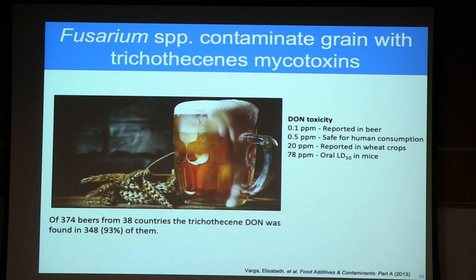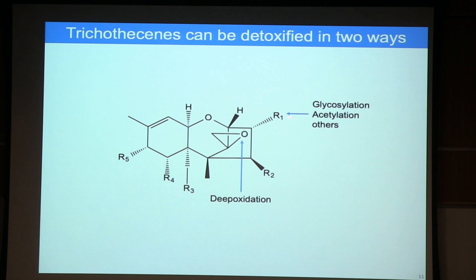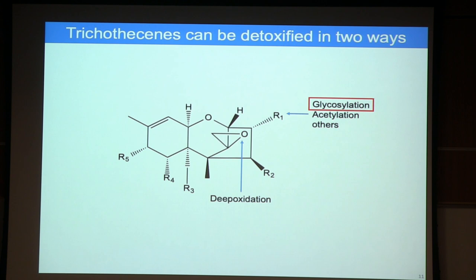Trichothecines help the fungus spread throughout the wheat head and are toxic to humans and animals that consume that wheat. Ideally, we want to inactivate them. There are two main approaches: the first is modification at the R1 position through glycosylation, acetylation, or other modifications; the second is depoxidation of the critical epoxide bond. These modifications are thought to disrupt trichothecine binding to the ribosome, eliminating their ability to inhibit protein synthesis.